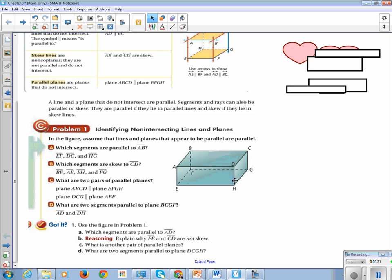Which segments are skew to CD? So if you look, BF, it's on this back corner. AE, it's on the front corner. EH is on the bottom front. And FG is this back right there.